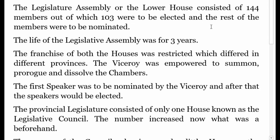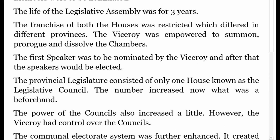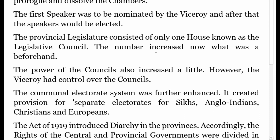The Legislative Assembly, or the lower house, consisted of 144 members, out of which 103 were to be elected and the rest were to be nominated. The life of the Legislative Assembly was three years. The franchise of both houses was restricted and differed across provinces. The Viceroy was empowered to summon, prorogue, and dissolve the chambers. The first Speaker was to be nominated by the Viceroy, after which speakers would be elected.